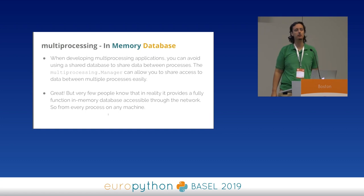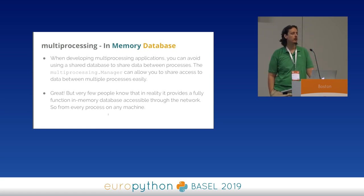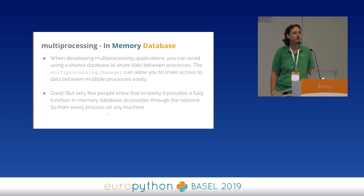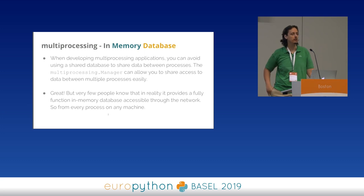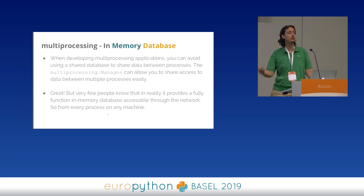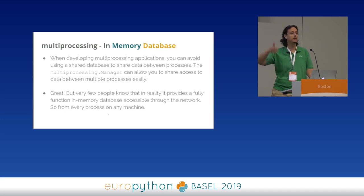One more feature available in the standard library that very few people know about is the multiprocessing manager. Some people have used it in the past to share data across multiple processes. It's a way to share data across processes — you can store any value inside the manager, and that value will be available to all processes sharing the same manager. Any data you store will be readable from all processes that are children of the process that forked the manager, and they can replace the data too.